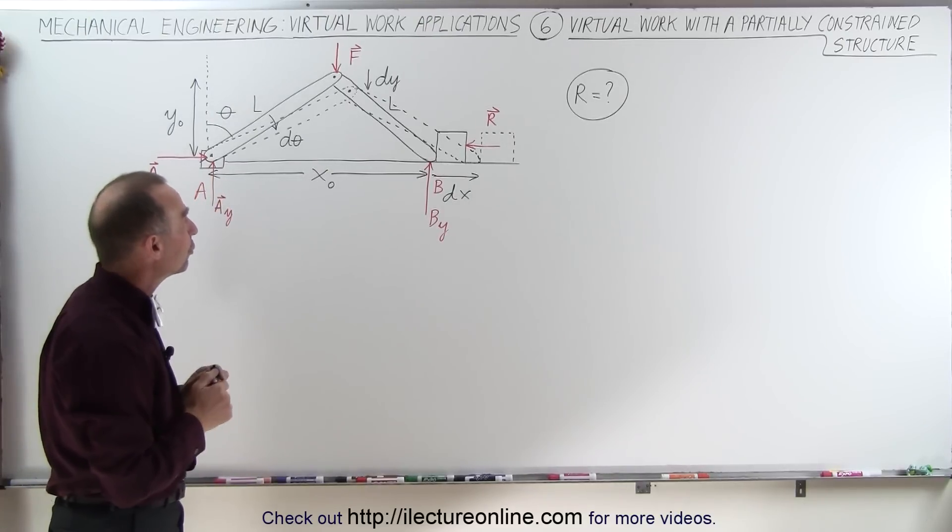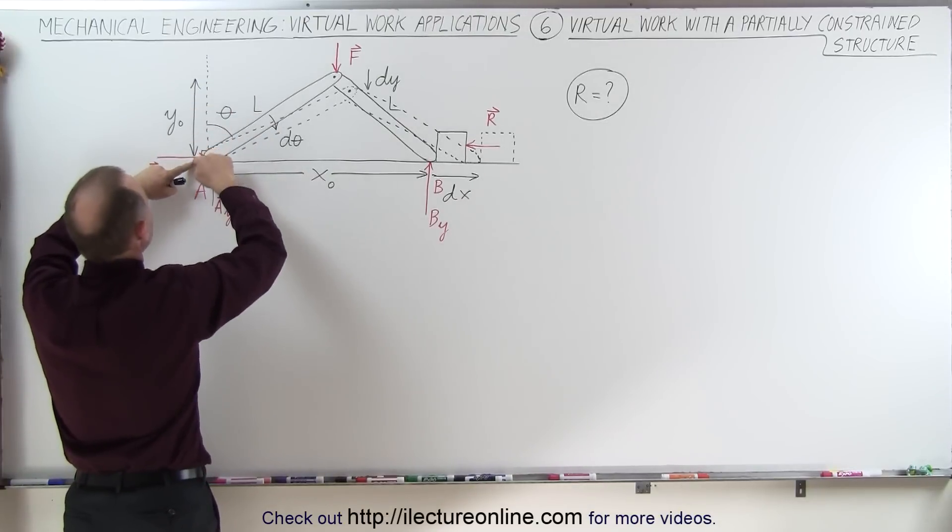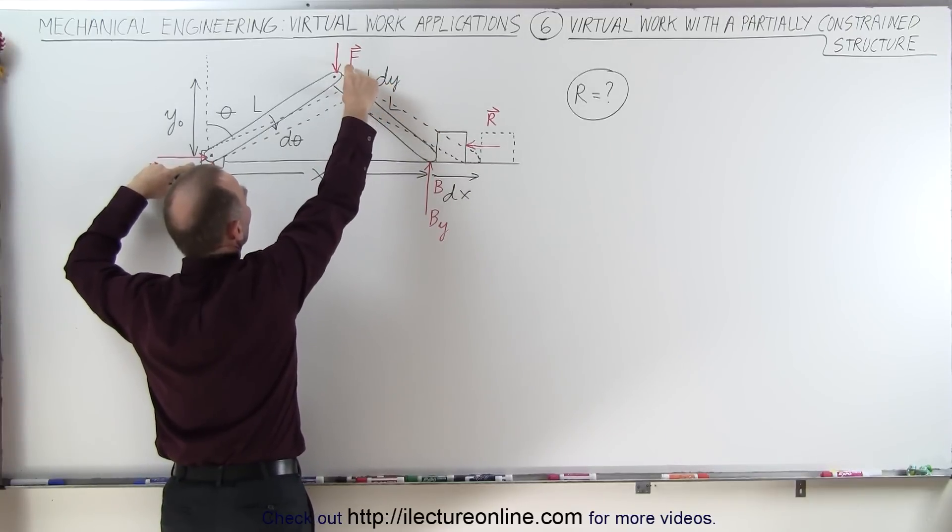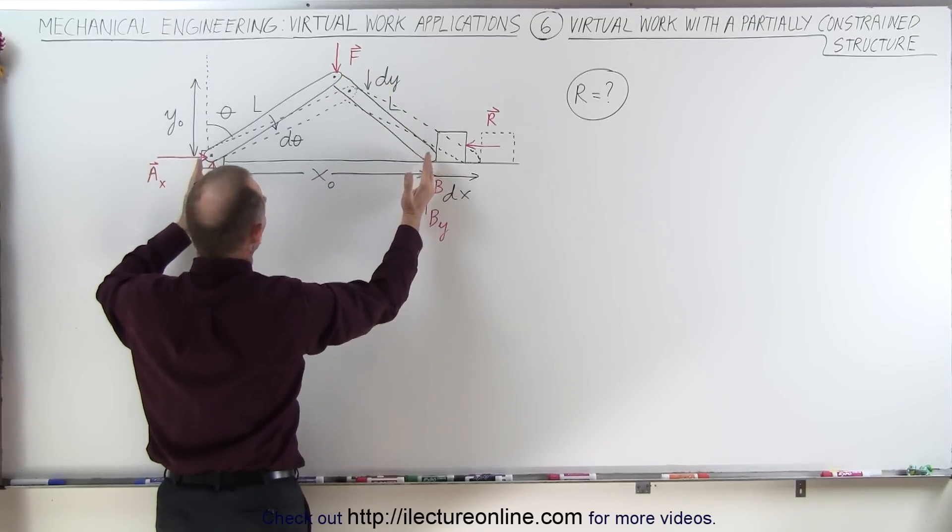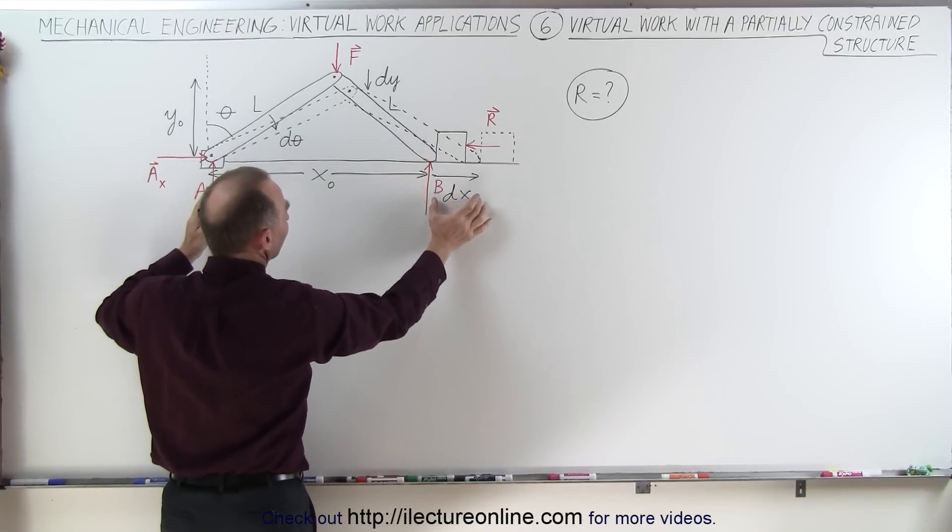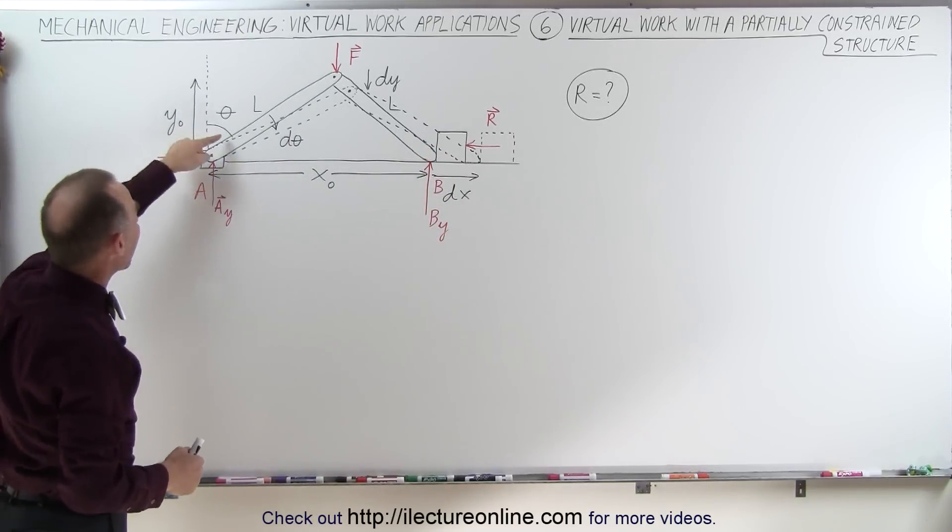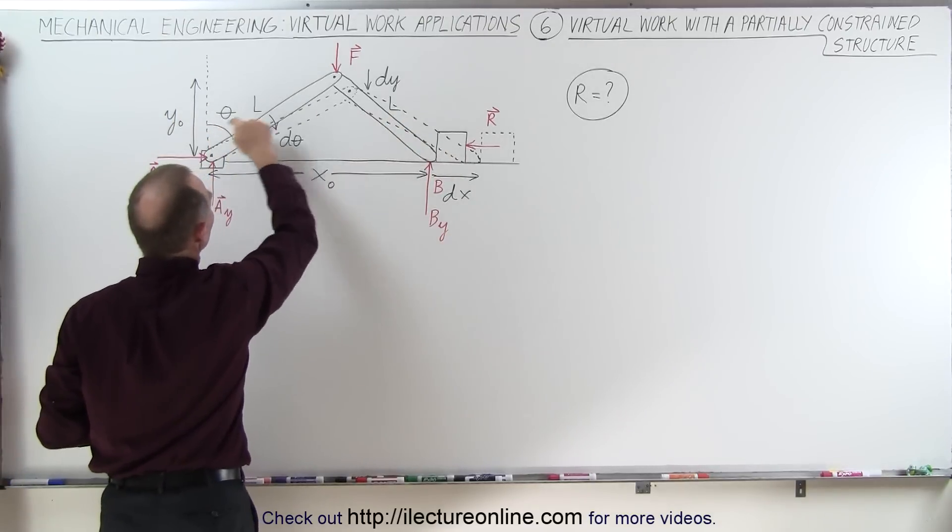So what we're going to do first is we're going to define the initial distance from here to where the force is acting initially. We're then going to define the change in the distance DY. We're also going to define the distance X from here to here and then the distance DX. So based upon the angle relative to the vertical, and we assume that this is going to be the same on both sides,